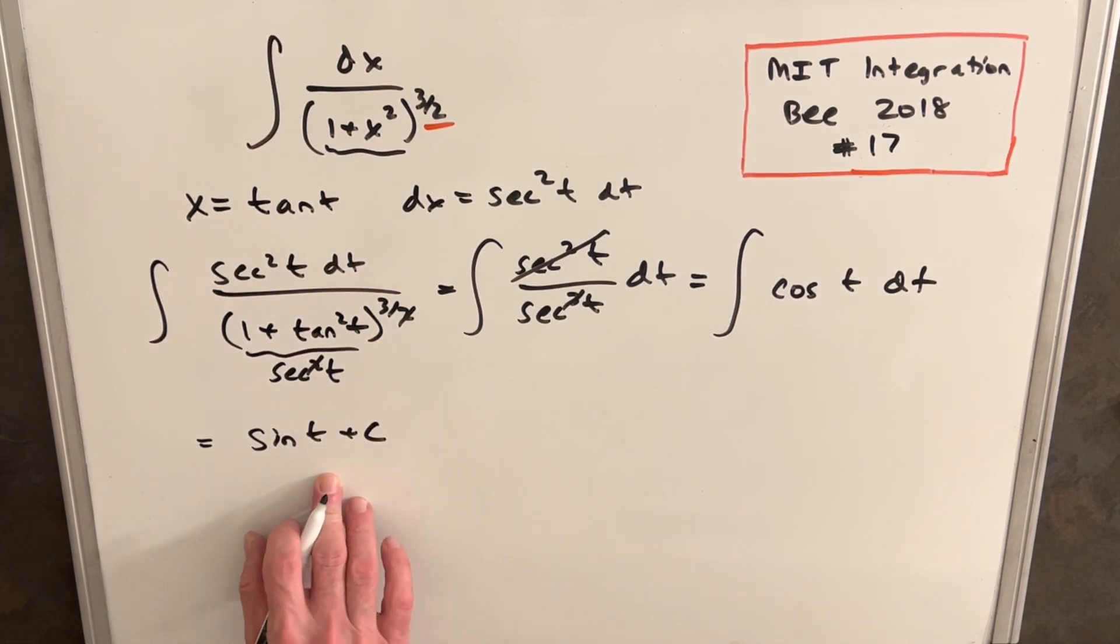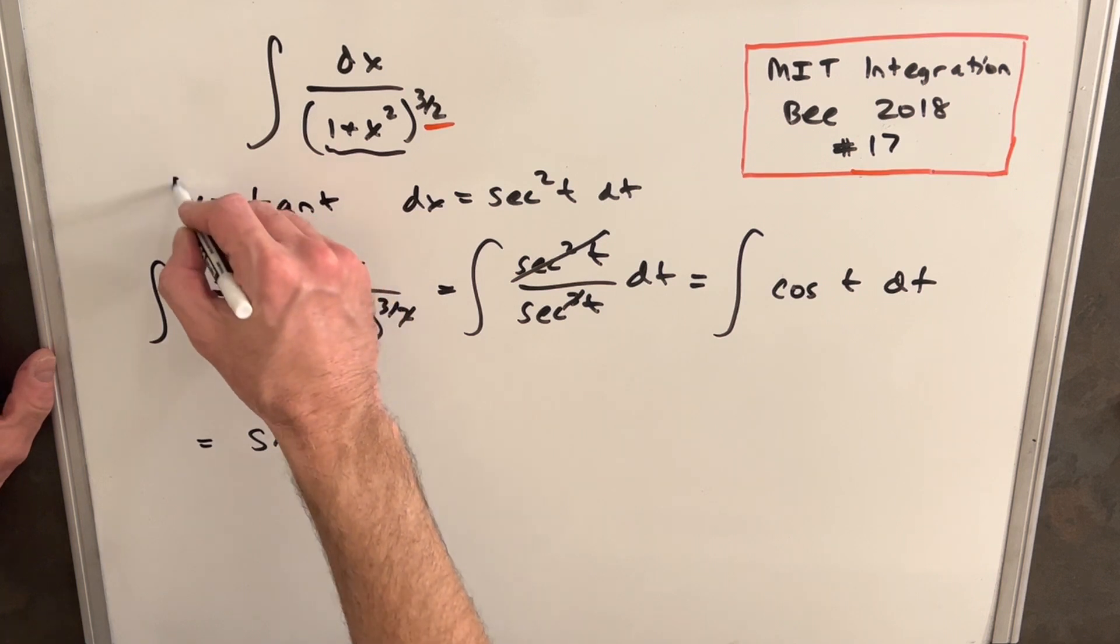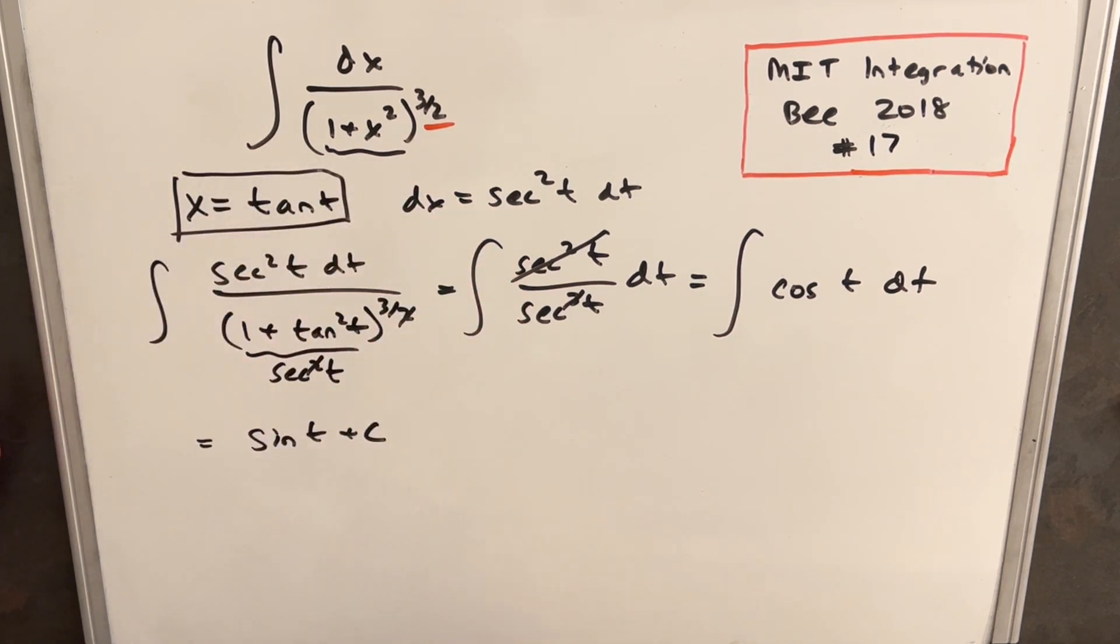So we have an answer, but we have it in terms of t. So the only tricky part here, we need to get back to x. So what we can do now is we can take our substitution and draw a little triangle.